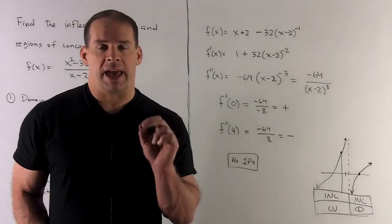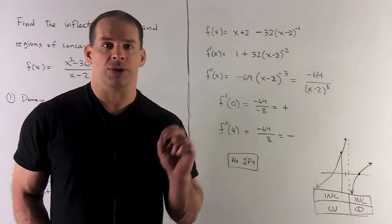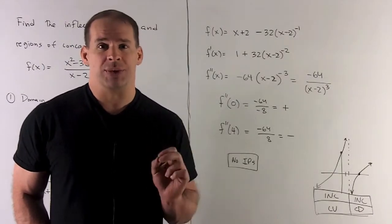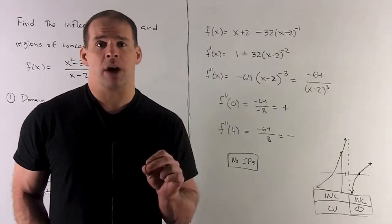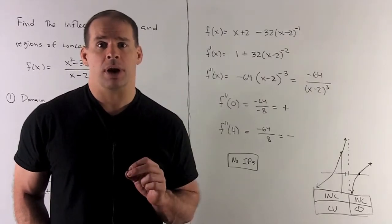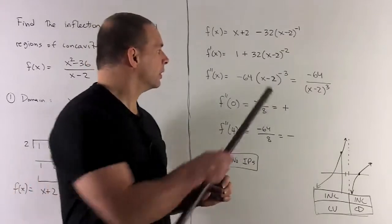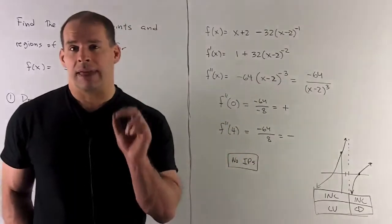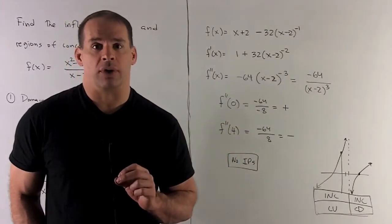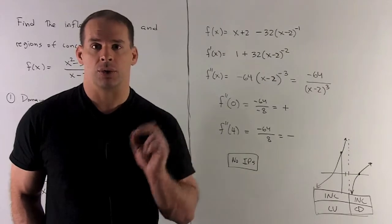Second derivative. Again, it's going to be chain rule. The 1 goes to 0. We bring the minus 2 down. Derivative of the inside is 1. And our exponent goes to a minus 3. So we have this, which we can rewrite as -64/(x - 2)³.